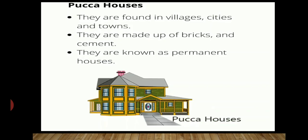Pakka house. They are made up of bricks and cement. They are known as permanent houses. They are found in villages, cities and towns, but are mainly found in cities. They are strong as compared to Kaccha houses. Pakka houses have two or more stories. Bungalow and apartment are examples of Pakka house.